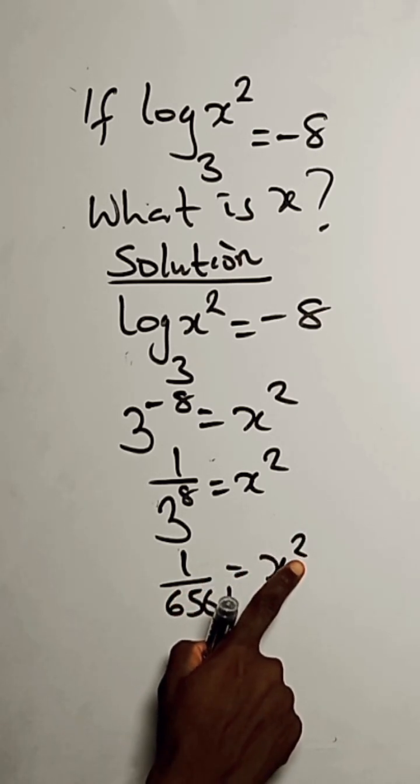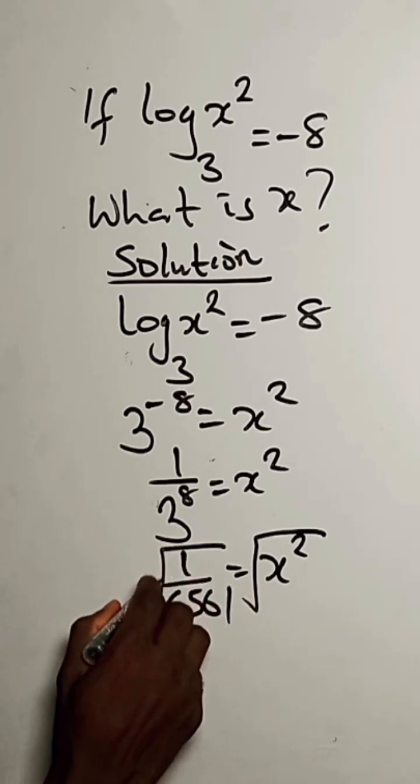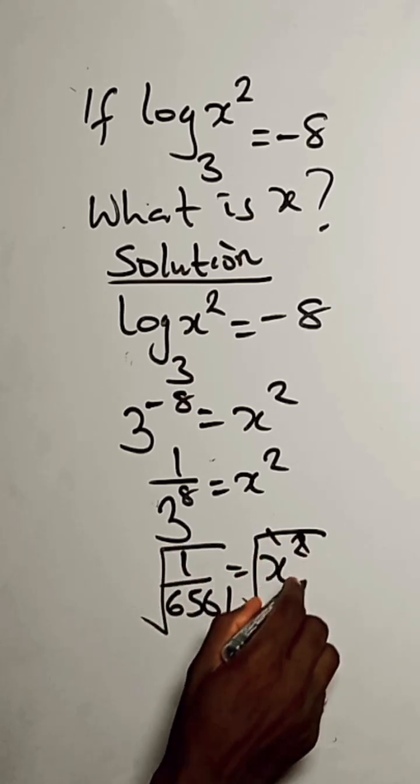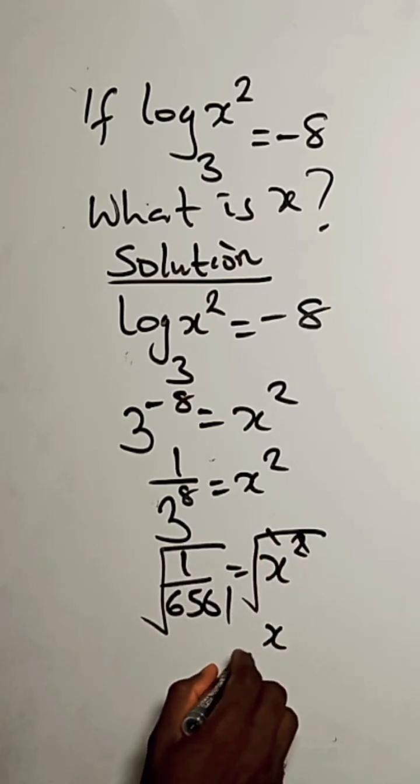To eliminate this, we take the square root of both sides. So this is out. We have just x.